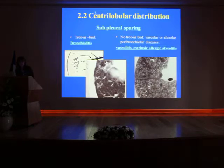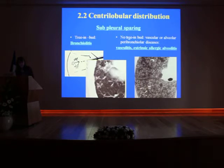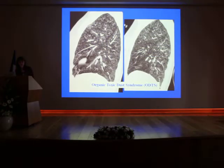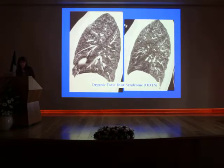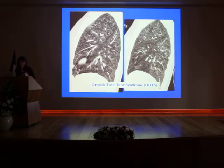The second distribution is the centrilobular distribution with tree-in-bud features, meaning there is a bronchiolitis. Tree-in-bud reflects the inflammation of the small airways. When there are no tree-in-bud features, it represents vascular diseases or peribronchiolar diseases. The main feature is subpleural sparing and also peripheral sparing — such as in ODTS, Organic Dust Toxic Syndrome, where there is diffuse bronchiolitis. It is very helpful to use reformations with maximum intensity projection with a thickness of 5 mm.